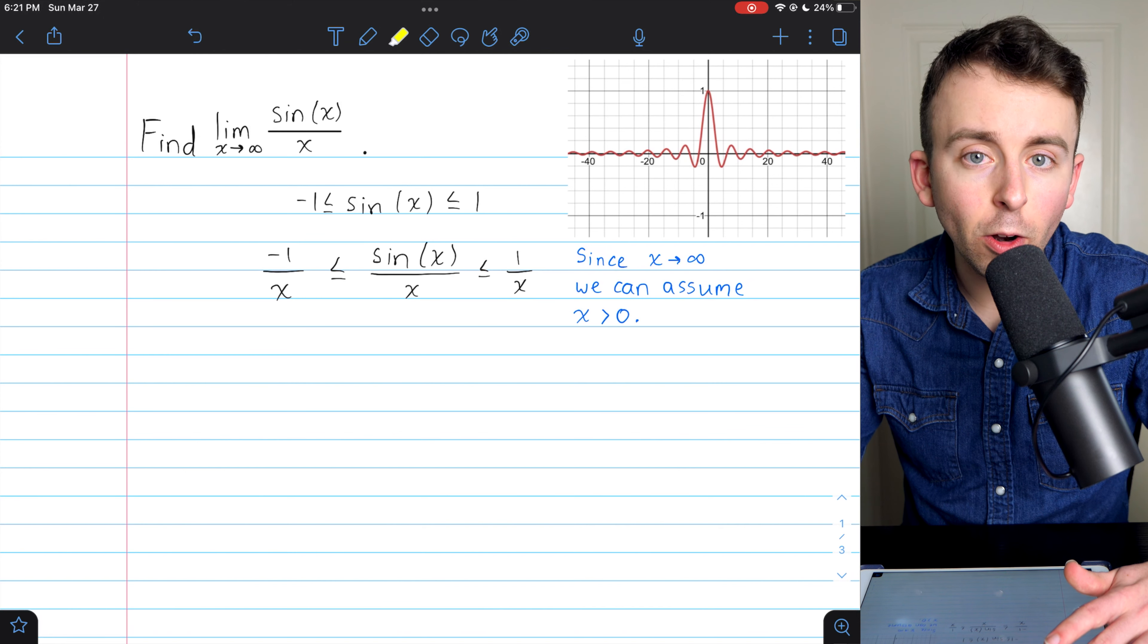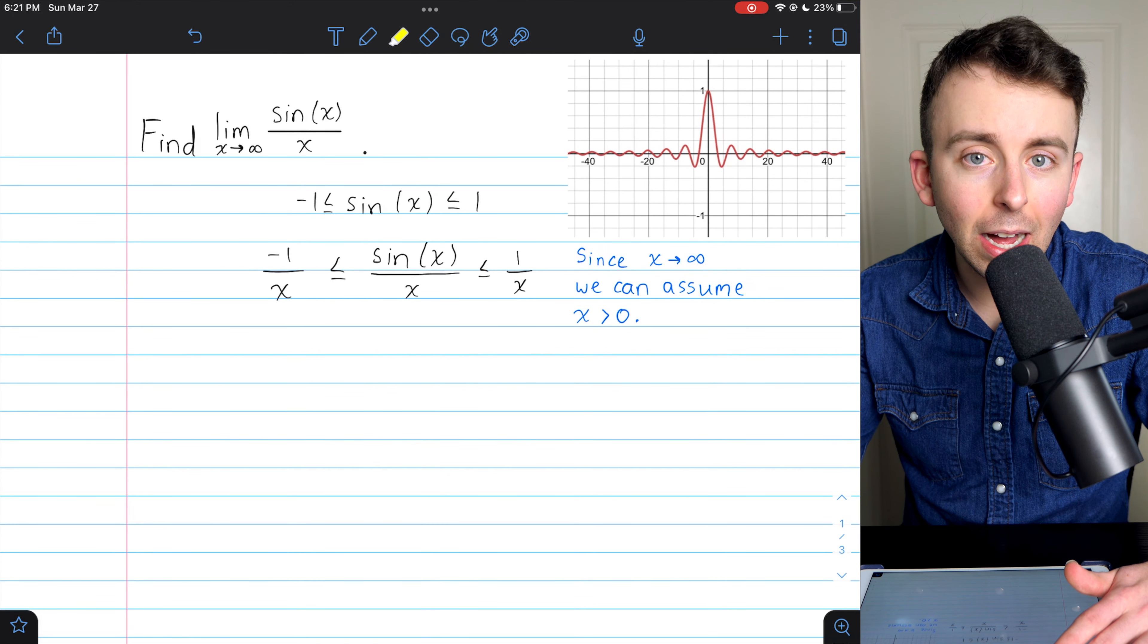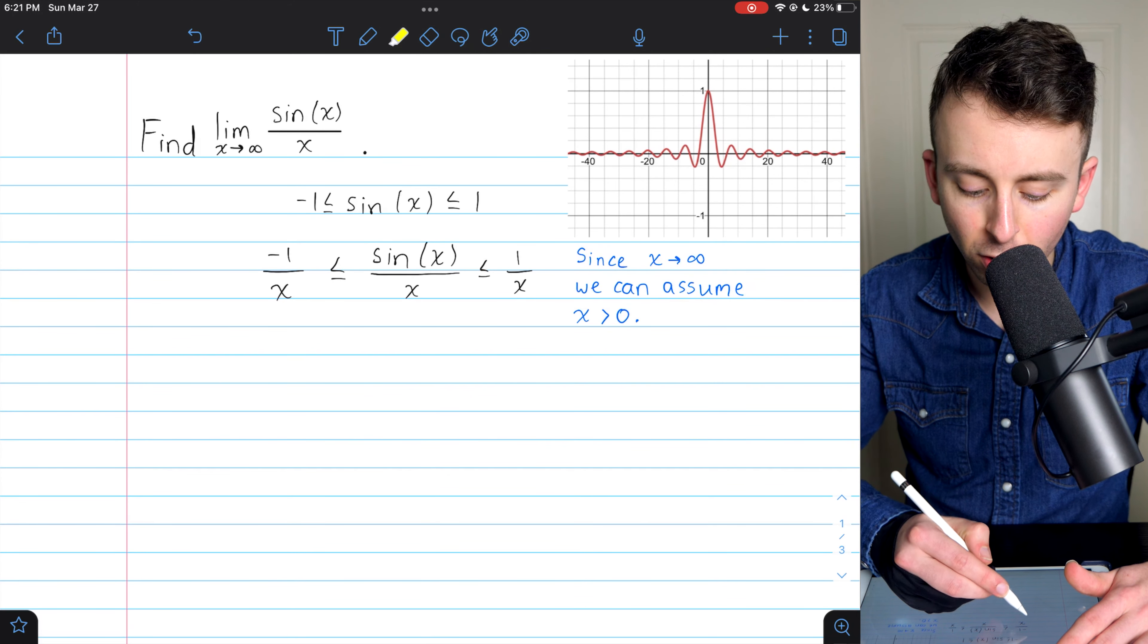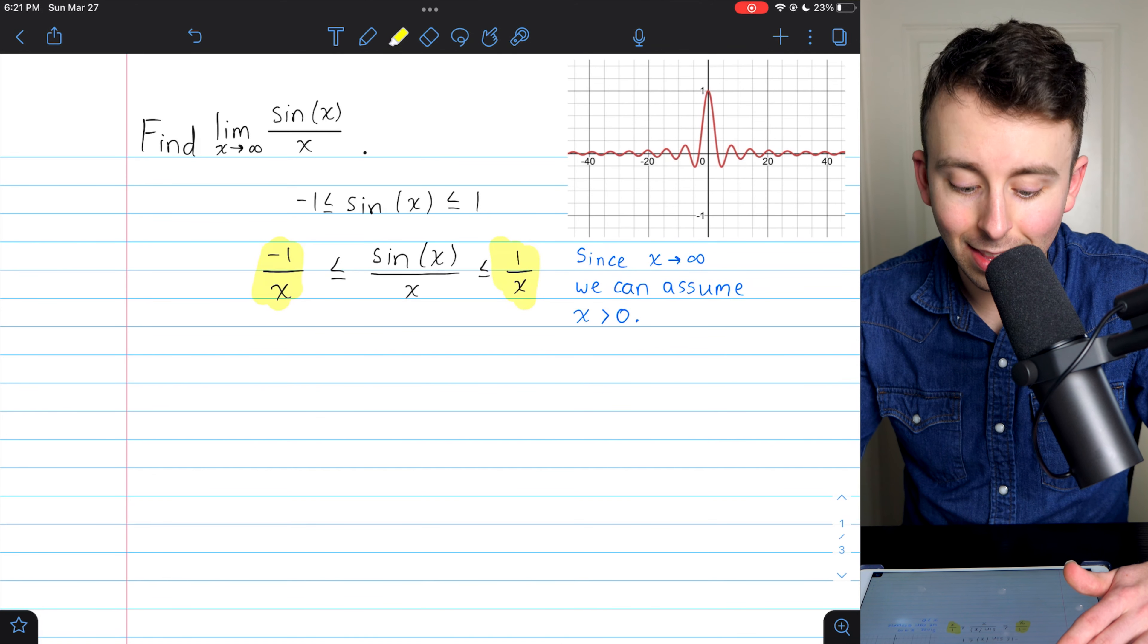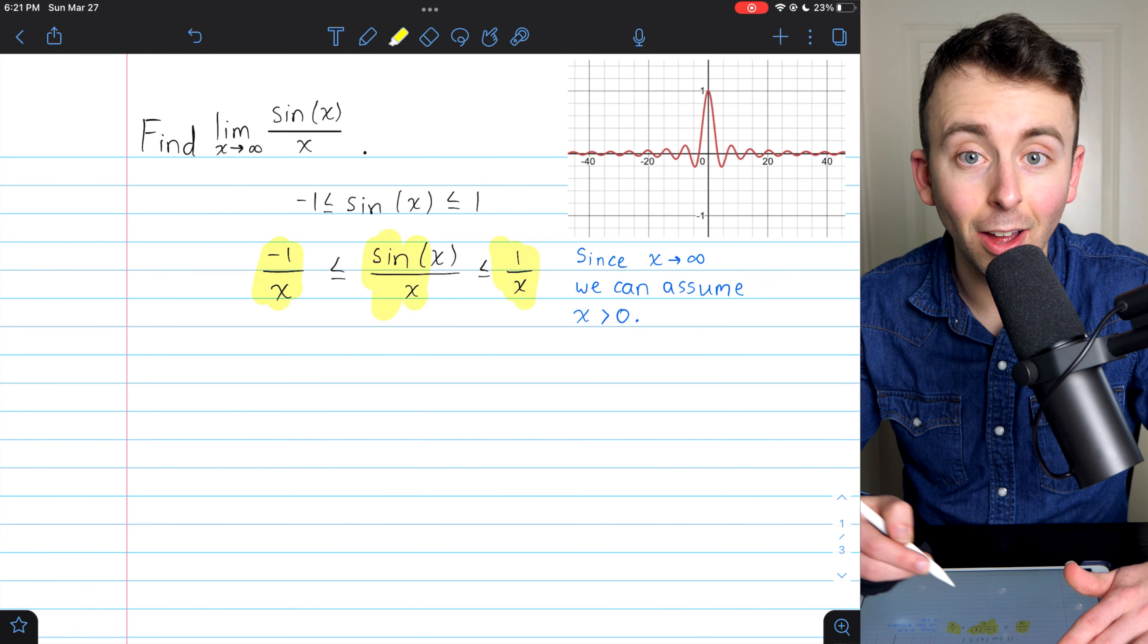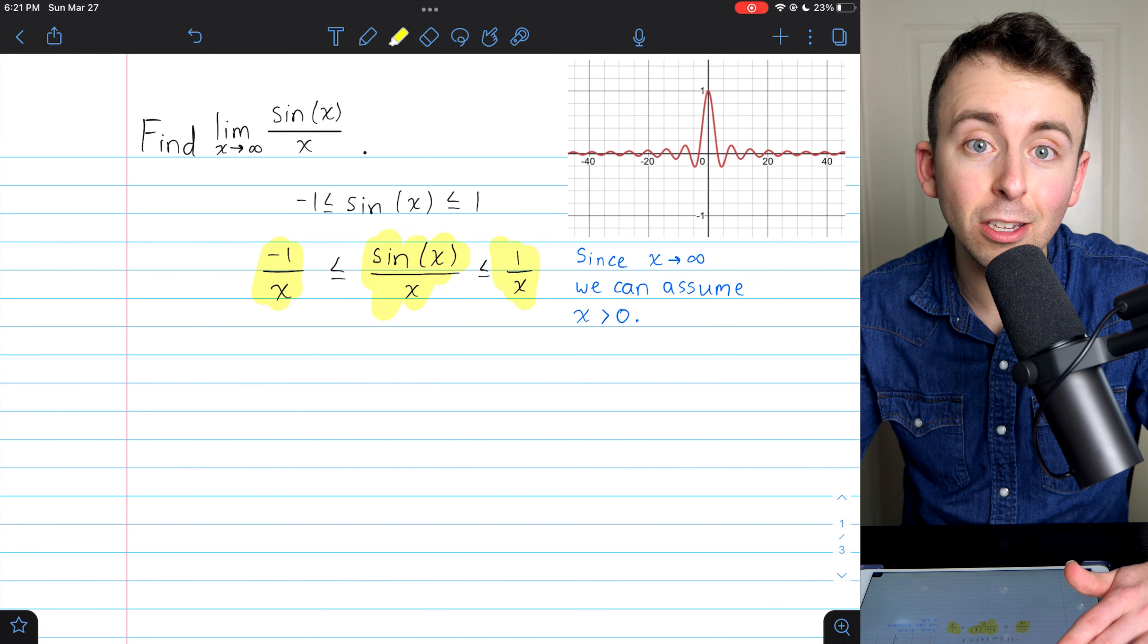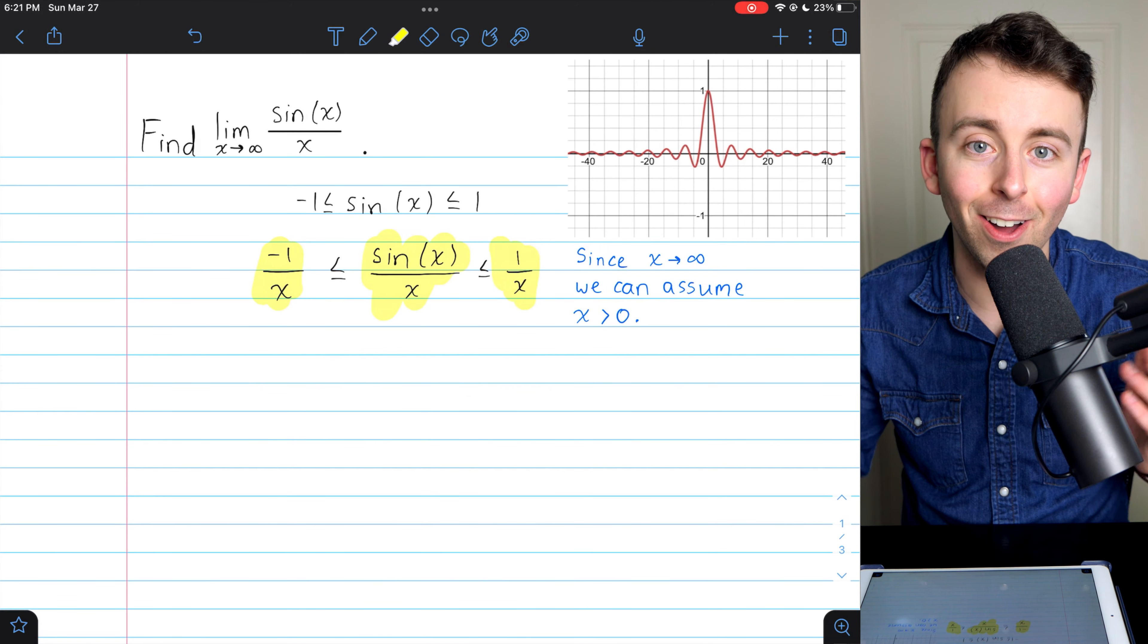Now, to finish off with the squeeze theorem, all we have to do is evaluate the limits of the functions on the left and the right. If the limits are the same, then we have the limit of the thing in the middle because it's squeezed between the two limits on the ends.